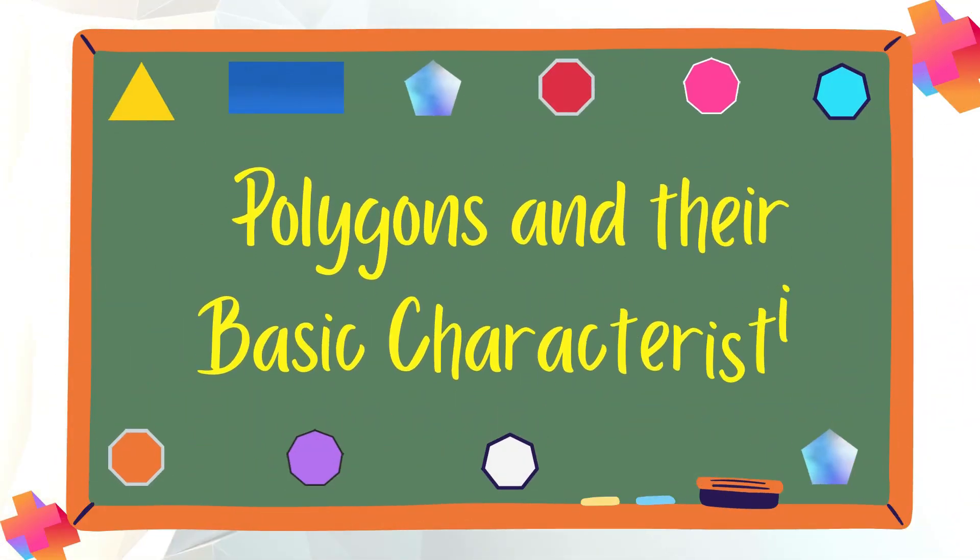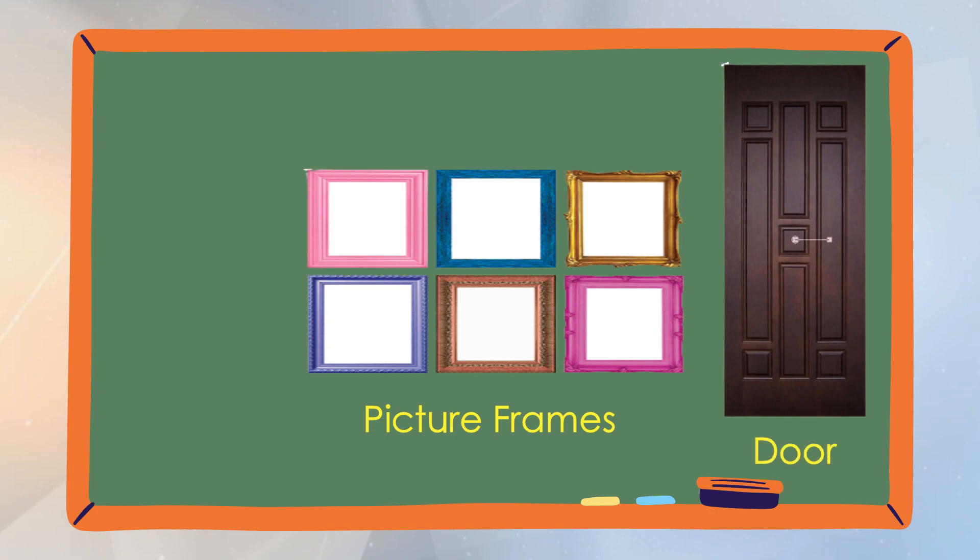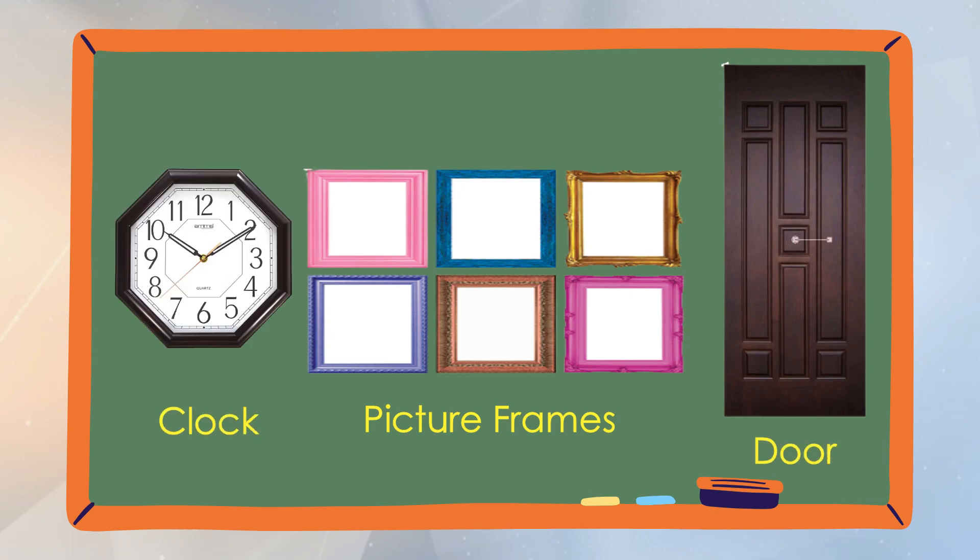Today, we are going to learn about polygons and their basic characteristics. There are many objects at home that resemble the characteristics of polygons. For example, we have picture frames, door, and a clock.